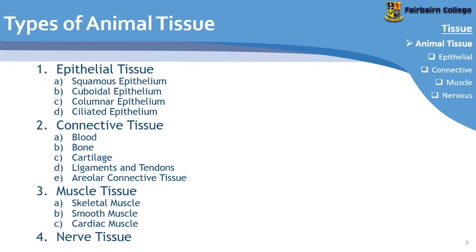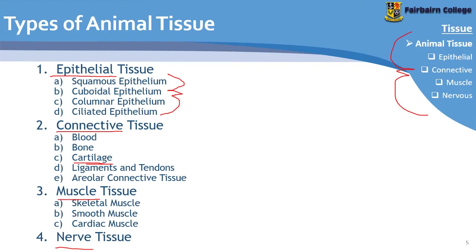Here you see all the different tissue types: epithelial tissue, connective tissue, muscular tissue, and nervous tissue. Under each of these they are further subdivided. It might get confusing — so if you're busy with cartilage and you're not sure where it fits in, you can come back to this slide and see that it's part of connective tissue. There's also a little box on the right-hand side with an arrow that tells you which tissue we're currently busy with.